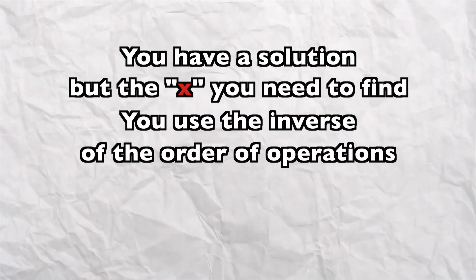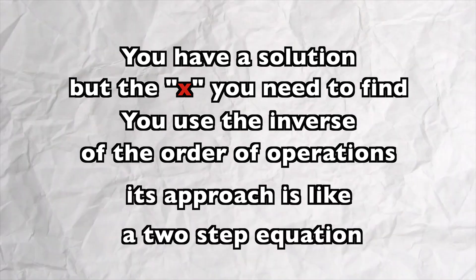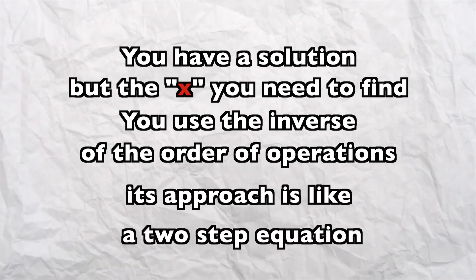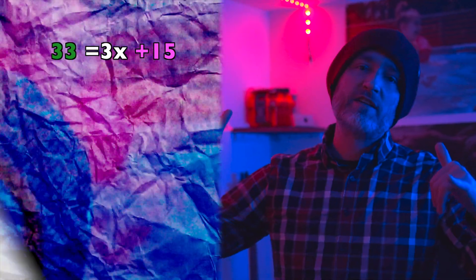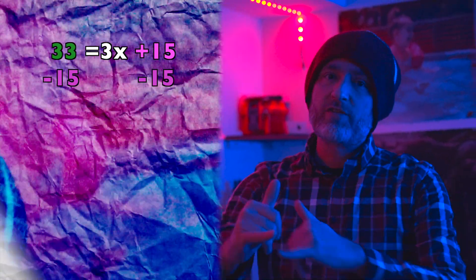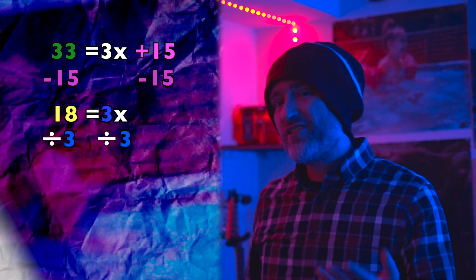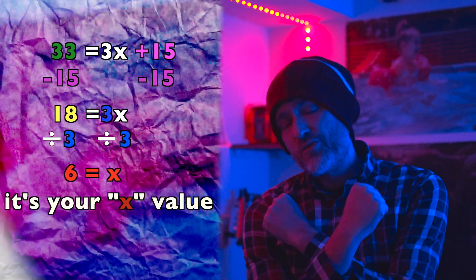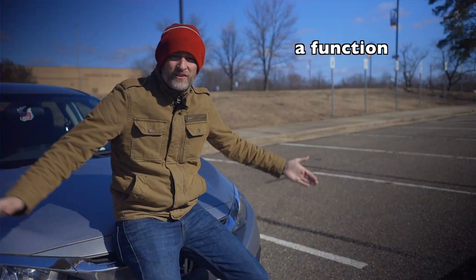You have a solution, but x you need to find. Use the inverse order of operations — it's approached like a two-step equation. Take 33 equals 3x plus 15. Subtract 3 from each side, you have 18. Divide each side by 3, you get 6. So 6 is your x value.